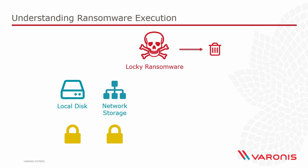But it goes further than that. It also moves on to the VSS snapshots — this is what we would normally use to roll back versions of files — and it deletes them. Obviously it does this because it's trying to remove one of the avenues the victim would have for recovery. That shadow copy service is there so that if a file is corrupted or lost you can roll back to another version. But that's exactly what ransomware doesn't want you doing, so a product like Locky is smart enough to remove that avenue and force the victim towards actually paying the ransom.